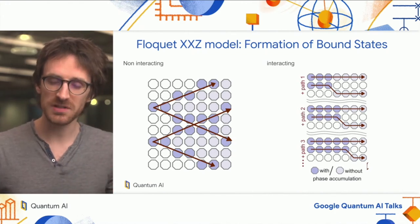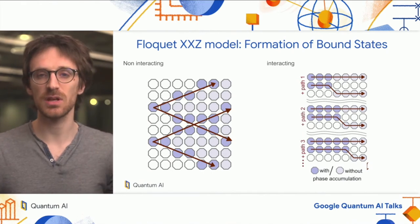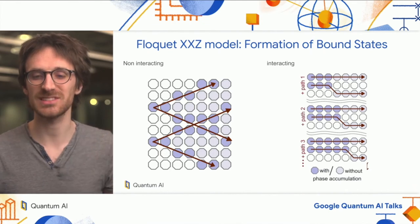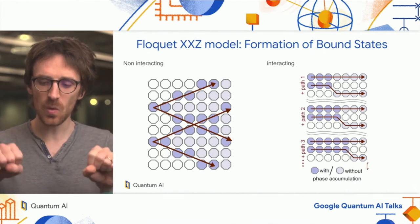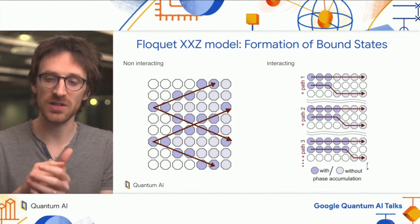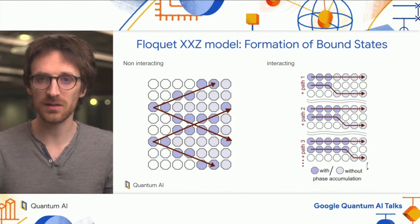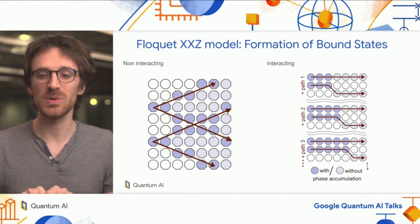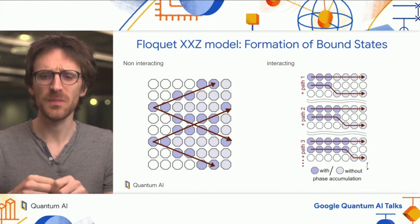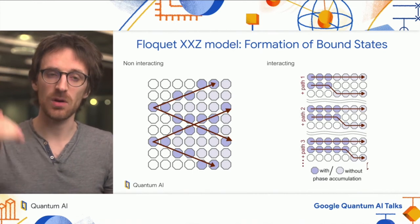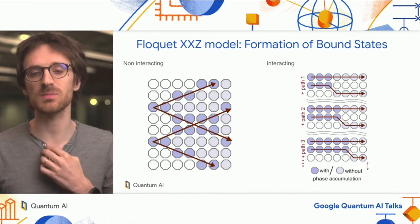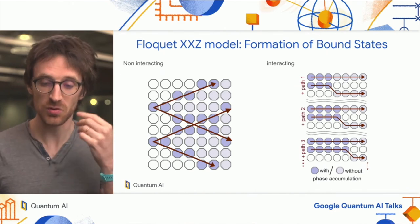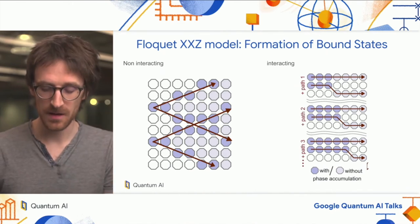If you have no interaction, excitations can go through each other without interacting. But when you have interaction, excitations that come close together will accumulate a phase. If you look at any path to separate two parts of a bound state, there will be destructive interference by summing over all paths due to this accumulation of phase.